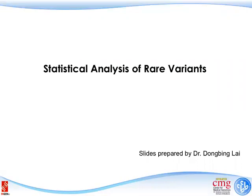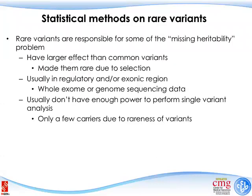We still have two more major topics today. The next part is the physical analysis for rare variants — slides were prepared by Dr. Dongbin Lai from the Medication Ethics Department. The statistical method for rare variants is a little different from what we talked about with GWAS. In many cases you can think of it as a direct association study with genotype and a certain level of phenotype.